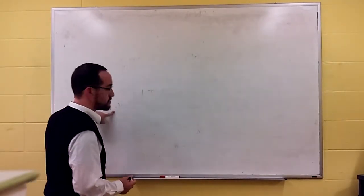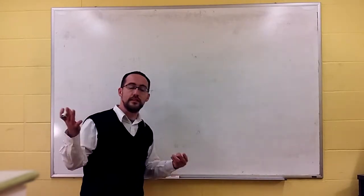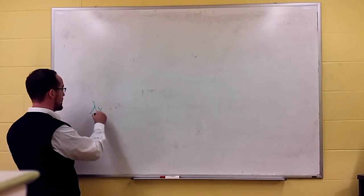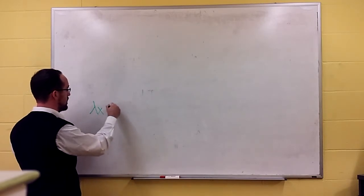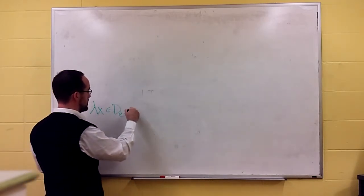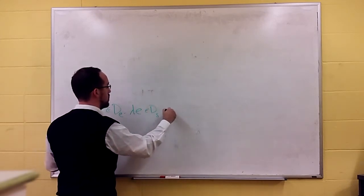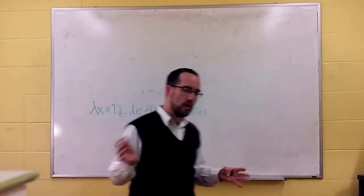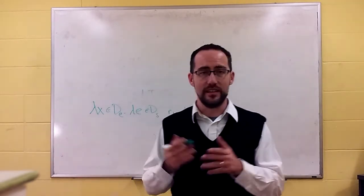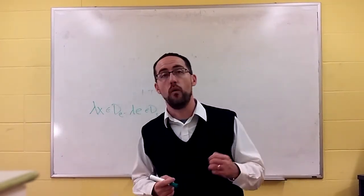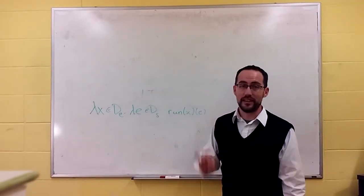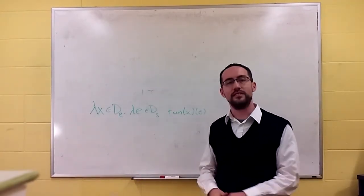So if we look at number one, we see the denotation in run, we get lambda x in d sub e, lambda e in d sub s, run x of e. So that's one if x runs in the event e, or to say one is e, one. This stands for one if e is an event of x running, and zero otherwise.